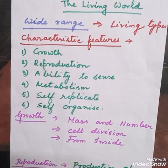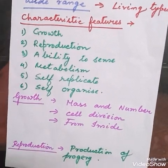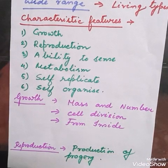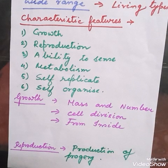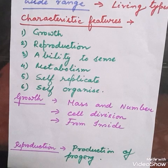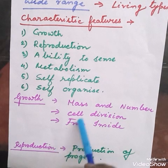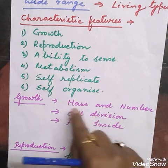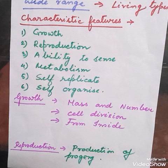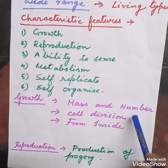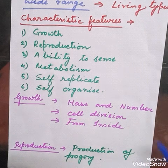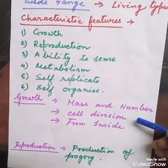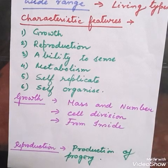Next we will start with the main topic, growth, since the first characteristic feature is growth. Growth means the increase in size and also the increase in the number of cells, which includes cell division. When you go to cell division, one cell gives rise to 2, 2 to 4, and so on. Growth is a very basic feature, and importantly, growth in living organisms takes place from inside the body — it is internal growth.